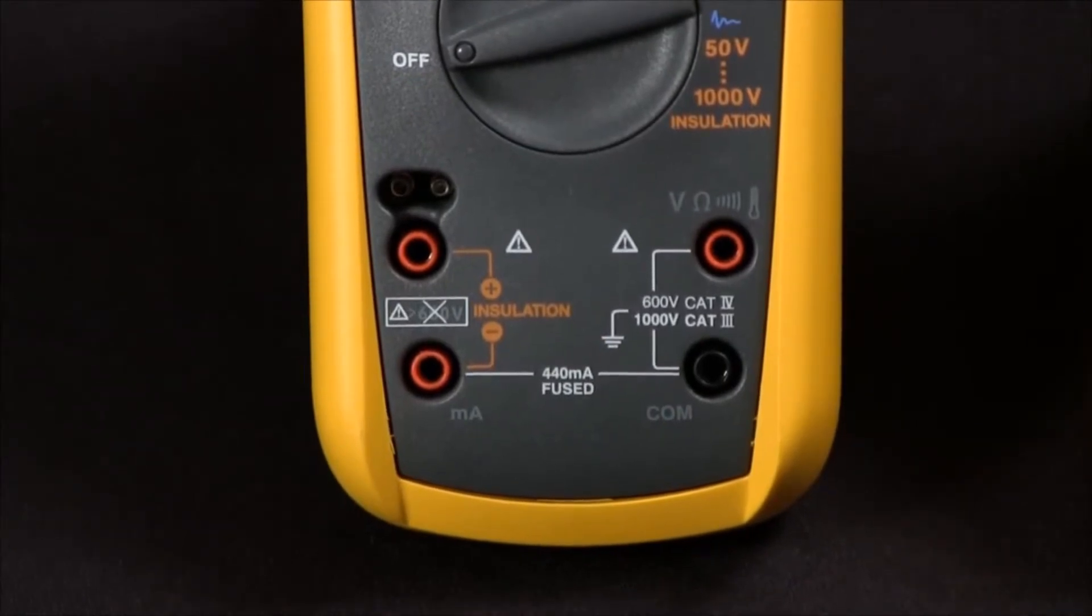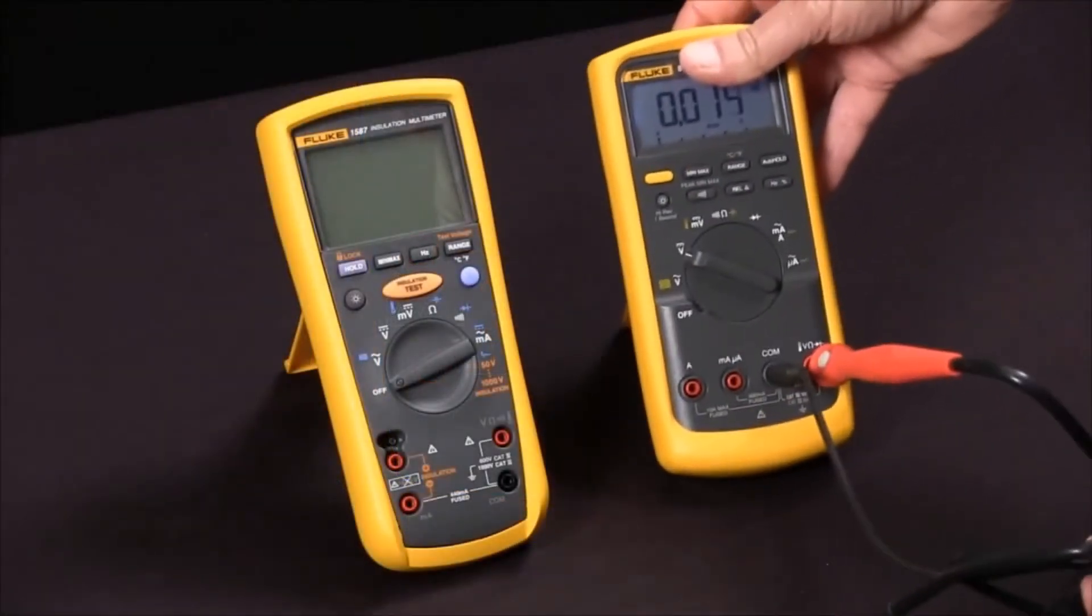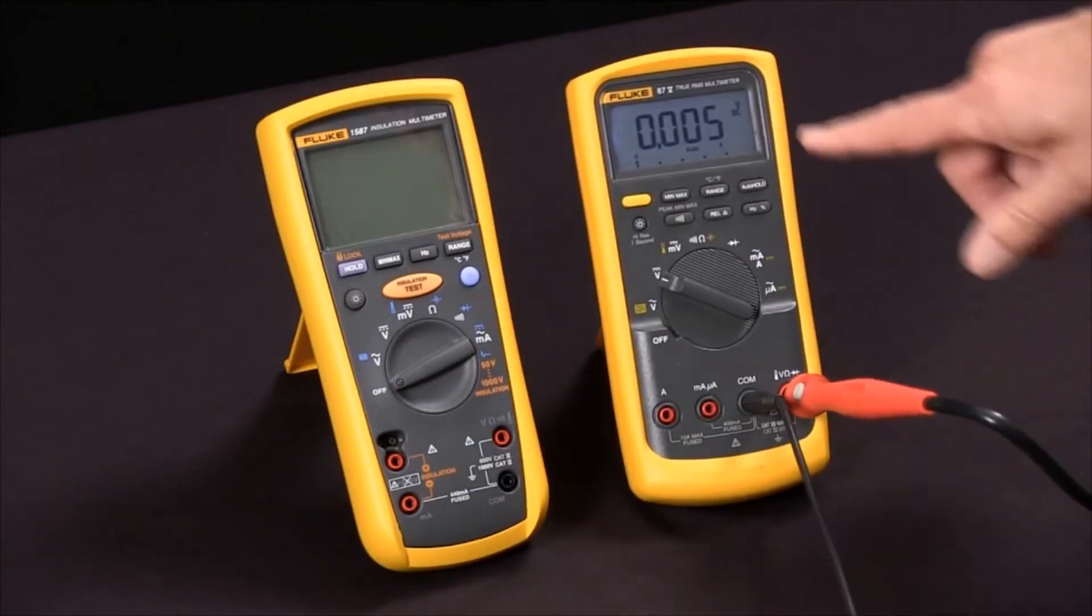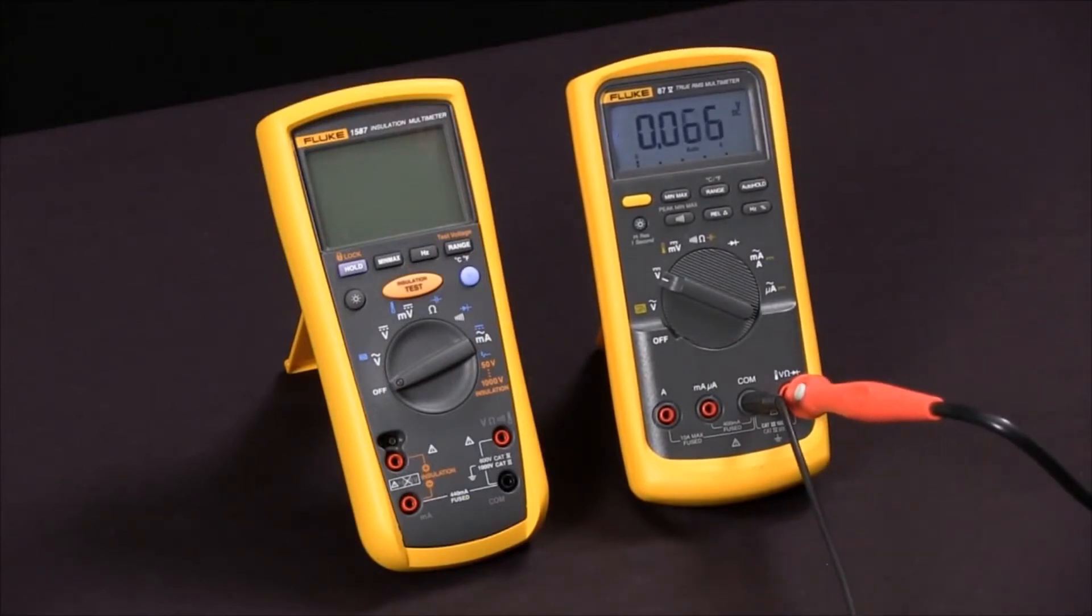First thing we're going to do is bring in a test specimen. We're going to use a digital multimeter and we're going to use the fact that its input impedance is 10 mega ohms as a test specimen.